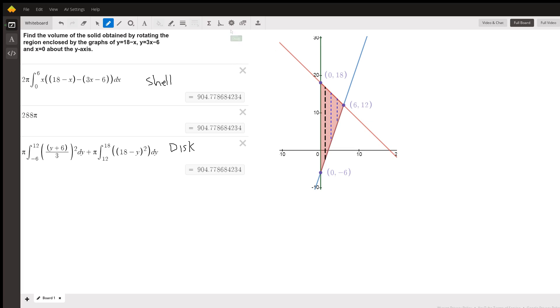There's two ways to do the problem. We can use the shell method, which means that we will be taking 2 pi times the integral from, in this case, 0 to 6. We're integrating along the x-axis of the average radius, which is just x, which is this expression right here. In other words, the distance from the axis of revolution to the center of the shell, a typical shell, is just x.